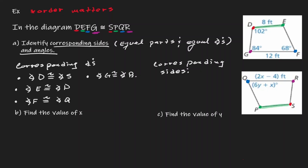And notice that we can also identify that by looking at this order. The first to the second point, DE, is congruent to the first and the second point, SP. So my first corresponding side is that DE is congruent to SP. And then we can just go in order now — we have some sense of direction.